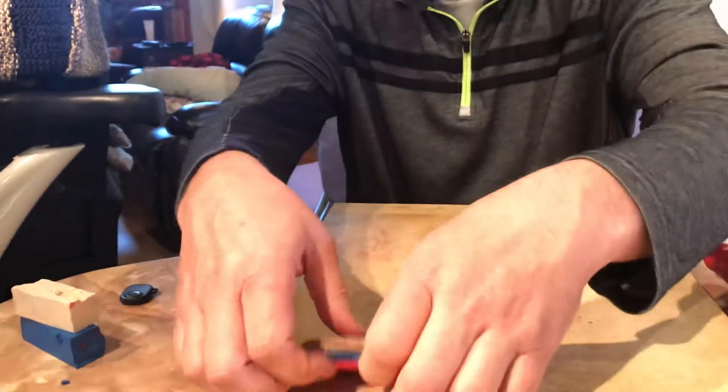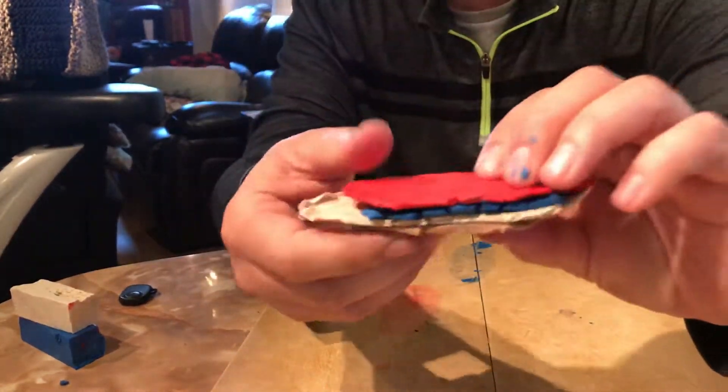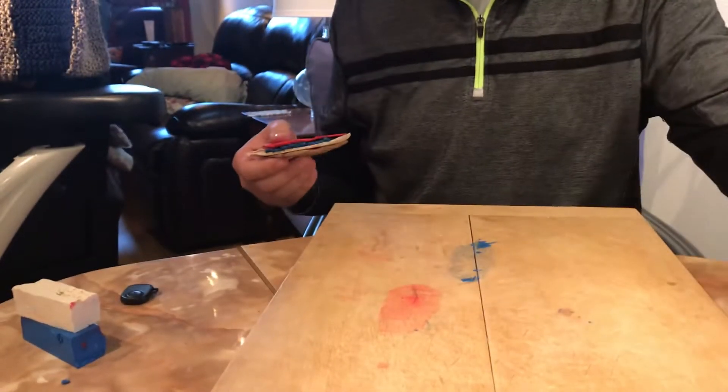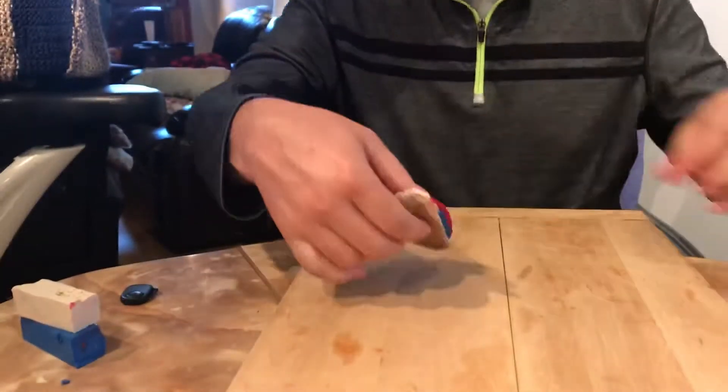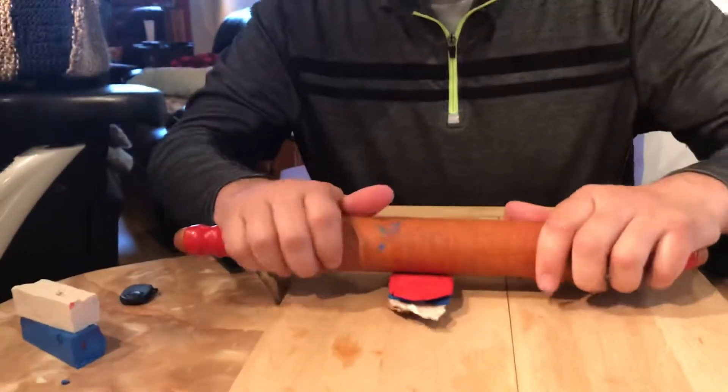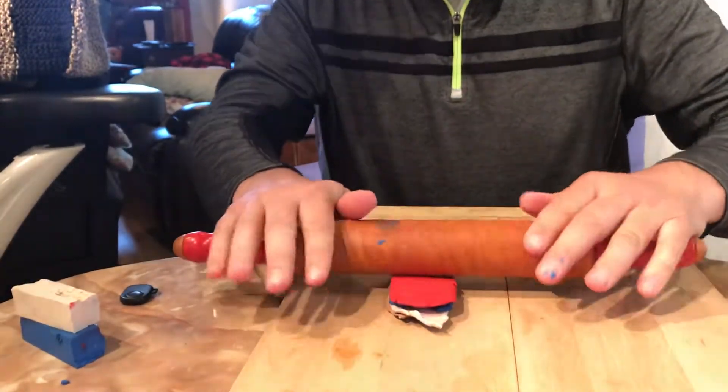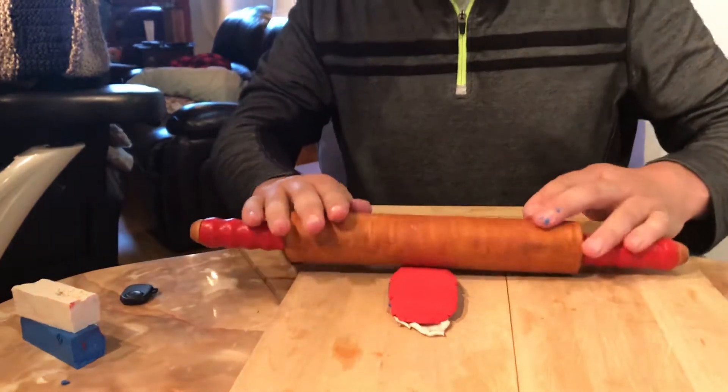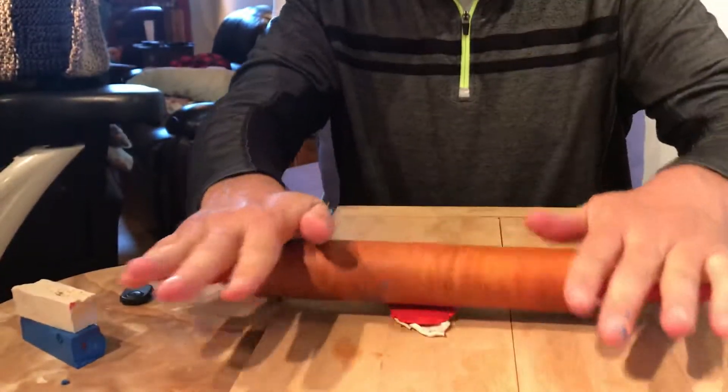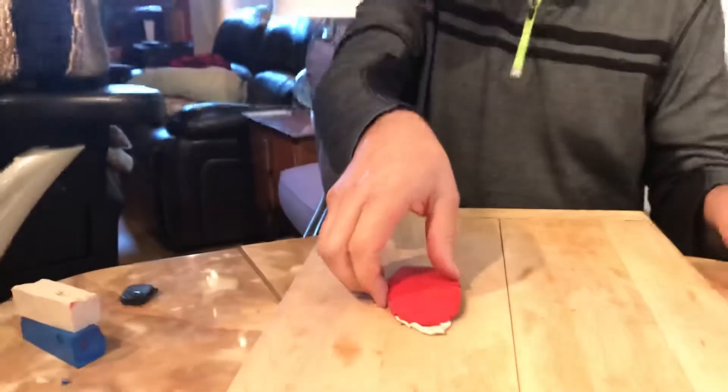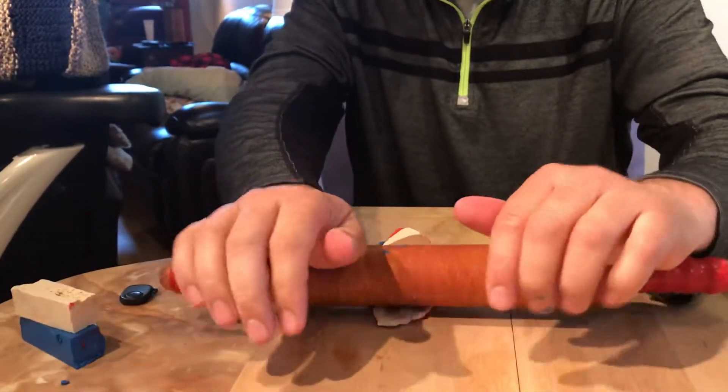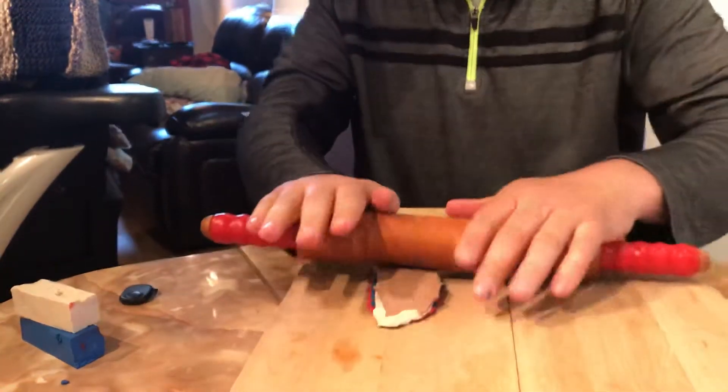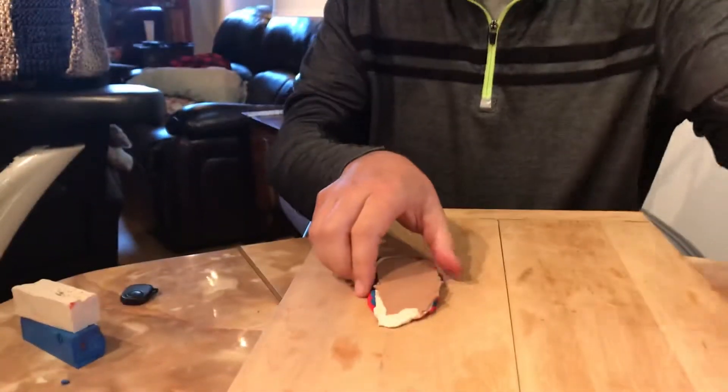We're gonna flip the board over here so it's on a little bit better side. We're gonna smoosh them together a little bit more, heat and pressure, get them good and flattened out here so they're all molded together like the real world.